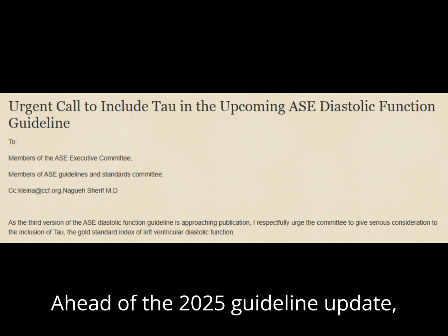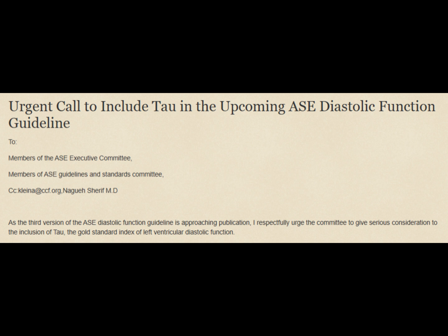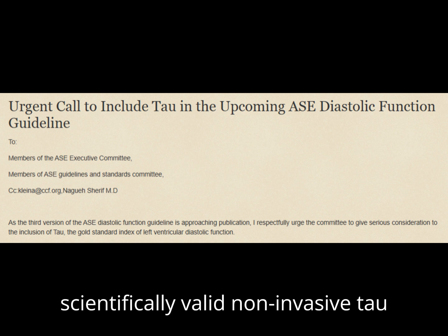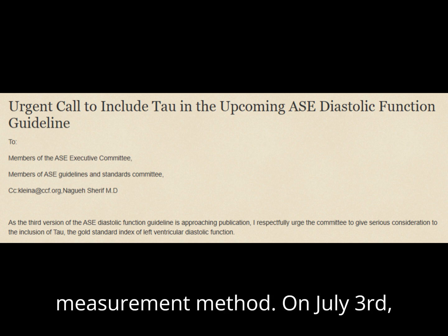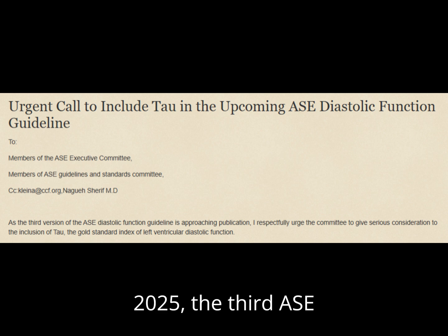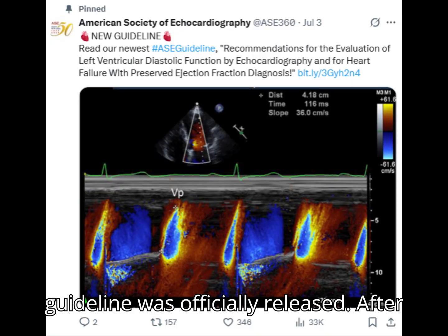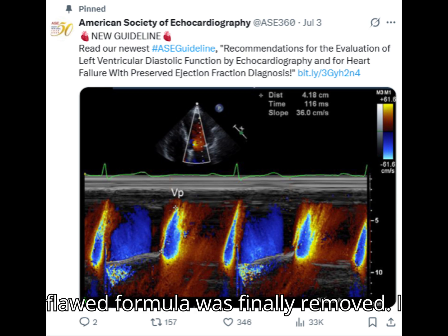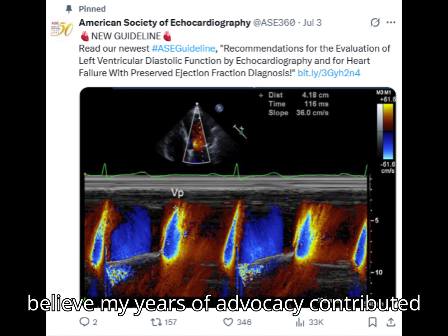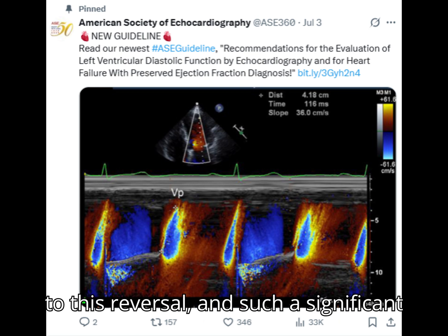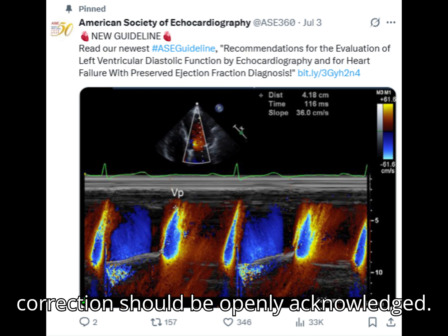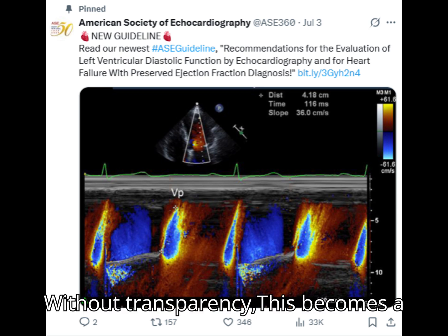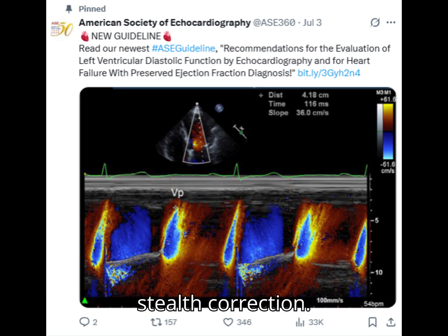Ahead of the 2025 guideline update, I publicly urged the ASE to include a scientifically valid, non-invasive tau measurement method. On July 3rd, 2025, the third ASE guideline was officially released. After decades of endorsement, Dr. Thomas's flawed formula was finally removed. I believe my years of advocacy contributed to this reversal, and such a significant correction should be openly acknowledged — without transparency, this becomes a stale correction.